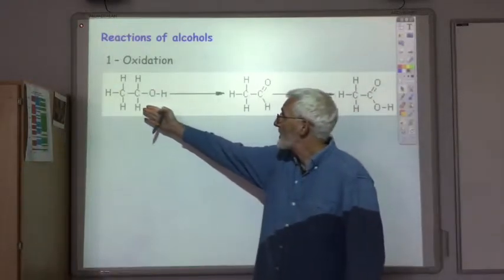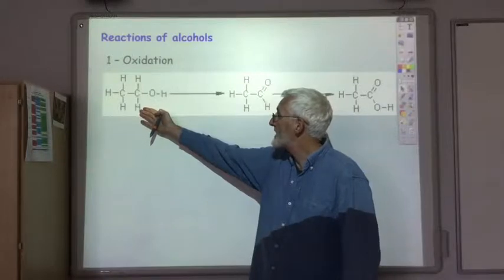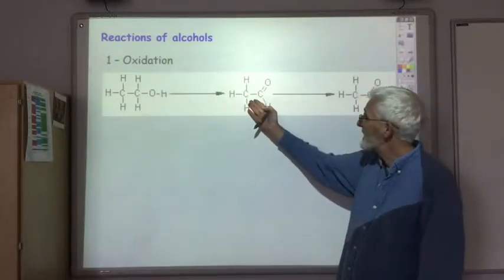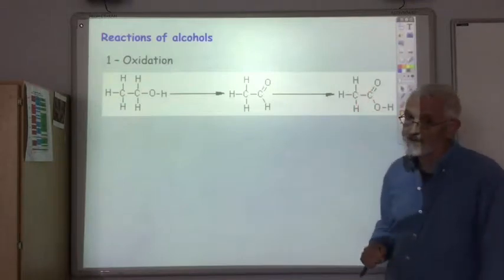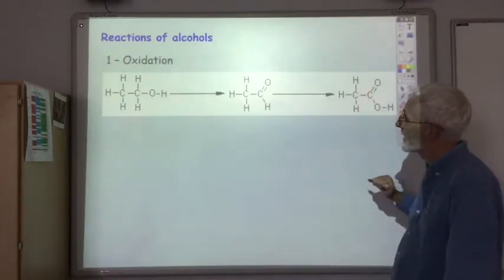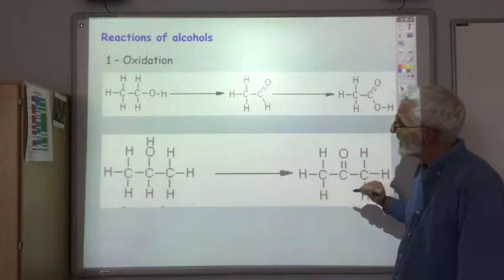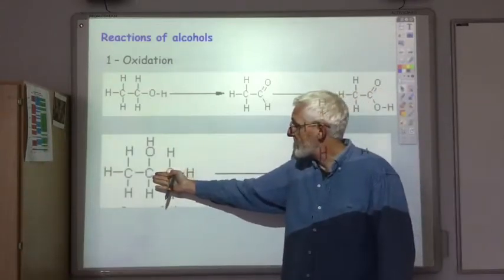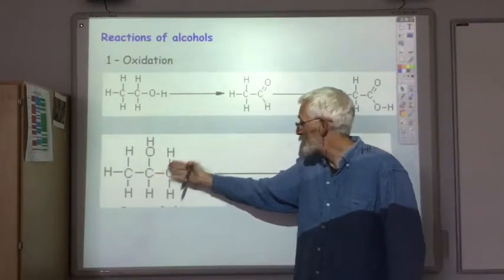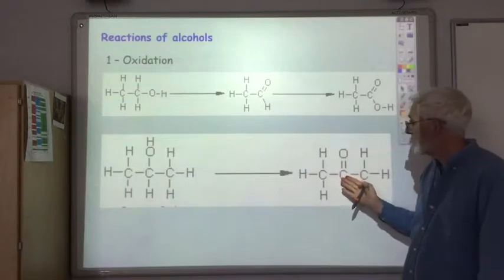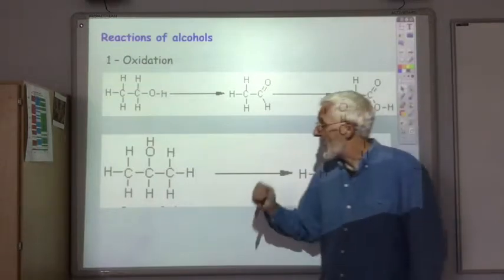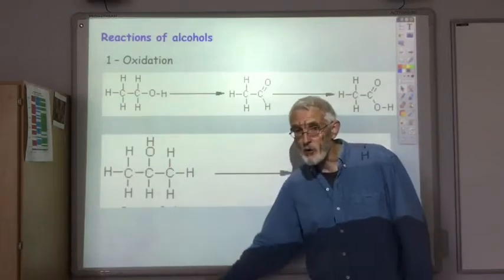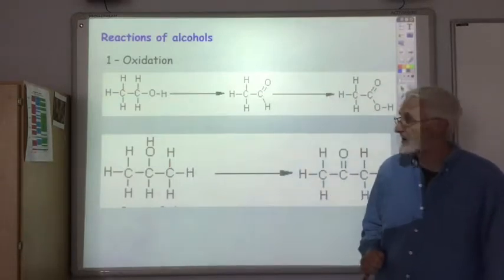So if you have a primary alcohol and oxidise it you produce an aldehyde and if you oxidise that further you get a carboxylic acid. If your alcohol is a secondary alcohol, on oxidation you produce a ketone which cannot be further oxidised, and if your alcohol had been a tertiary alcohol it can't be easily oxidised.